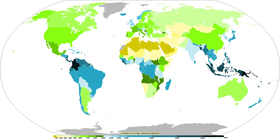In mountainous areas, heavy precipitation is possible where upslope flow is maximized within windward sides of the terrain at elevation. On the leeward side of mountains, desert climates can exist due to the dry air caused by compressional heating. Most precipitation occurs within the tropics and is caused by convection. The movement of the monsoon trough, or intertropical convergence zone, brings rainy seasons to savannah climes.